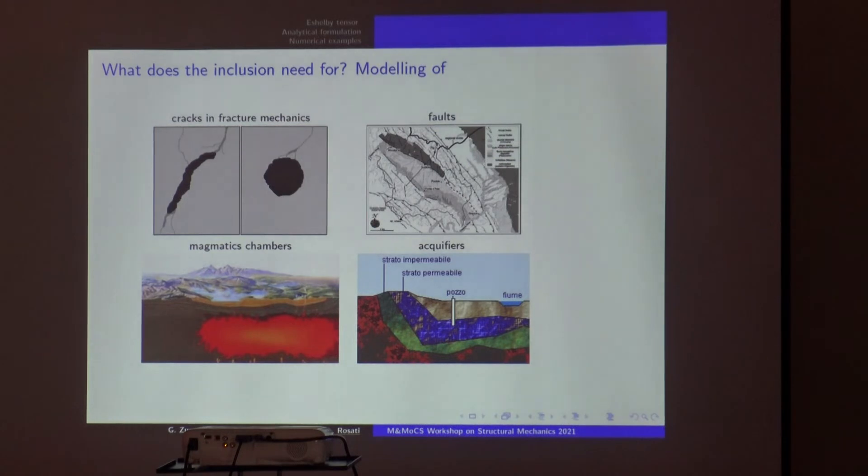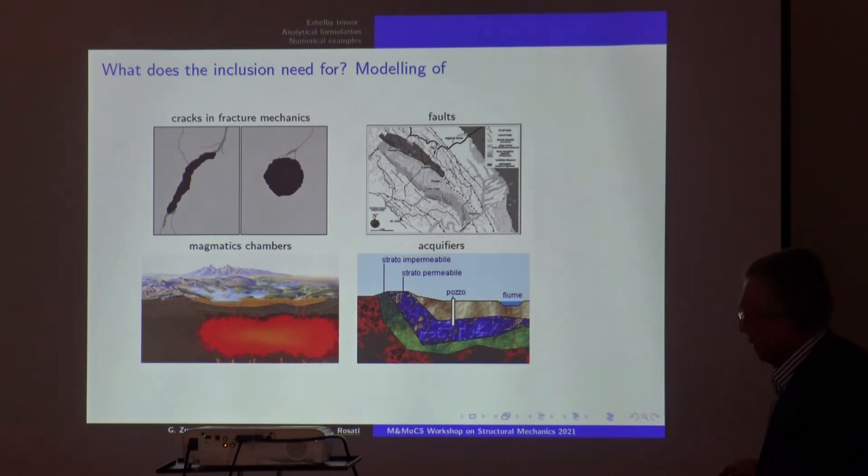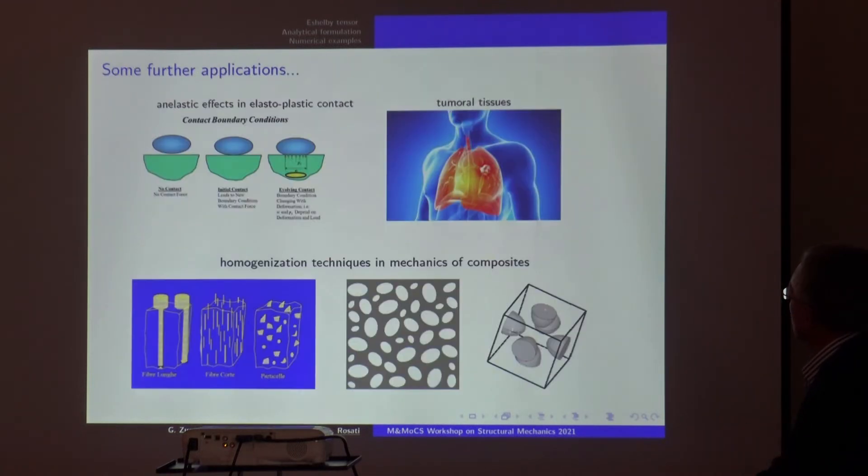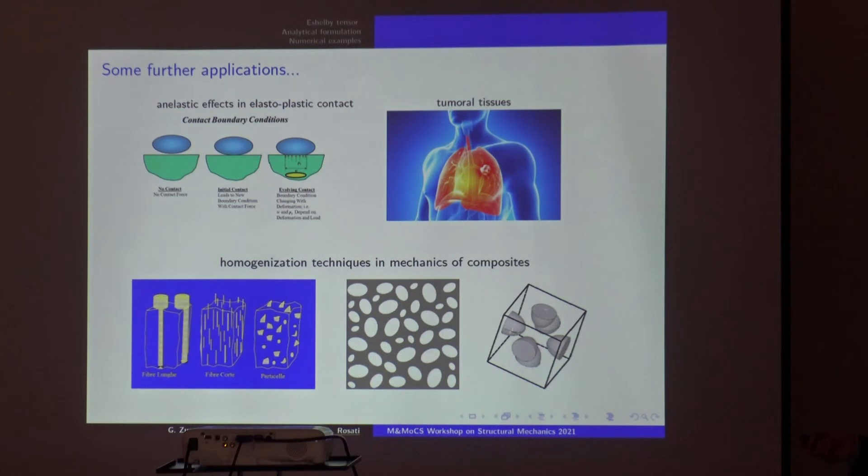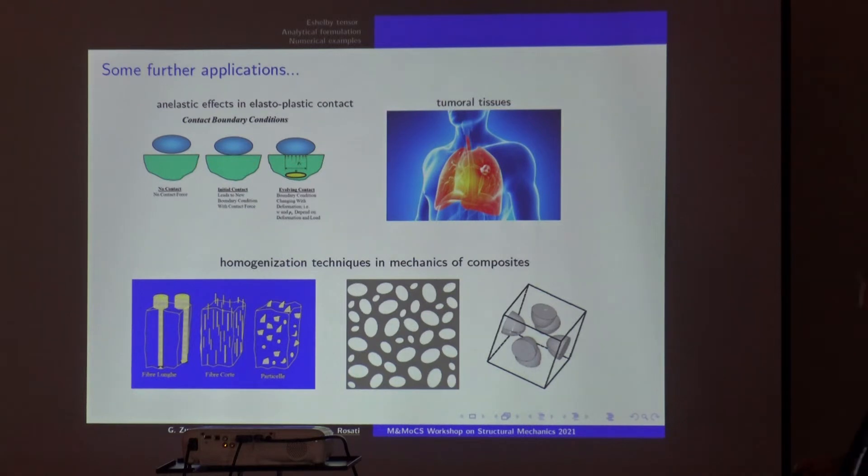This concept is very useful and often applied to model cracks in fracture mechanics, faults, magmatic chambers, aquifers. Of course we did not make these applications—I told you I crunched numbers, so I wanted to understand how to compute them. Other applications include contact boundary conditions, inelastic effects in elastic contact, two-material altitudes, and of course homogenization techniques in mechanics of composites.